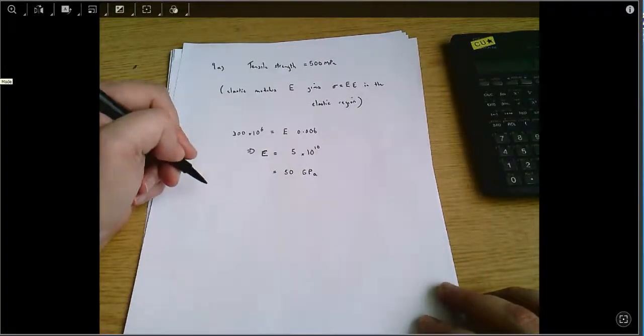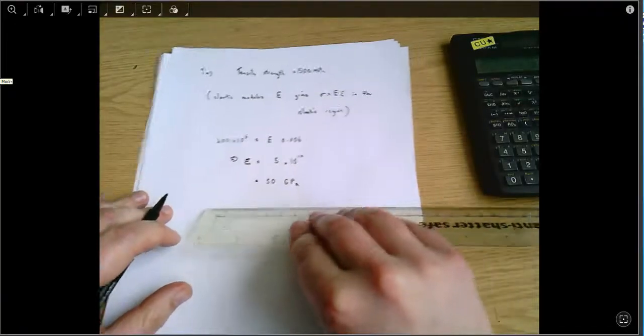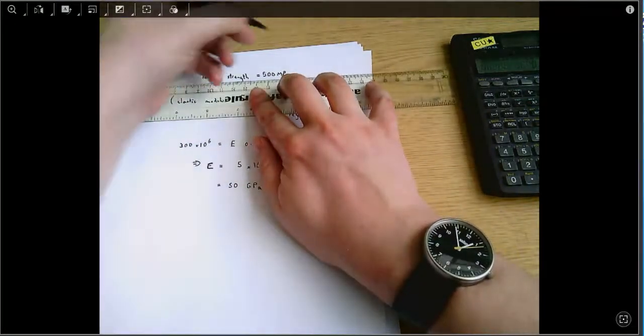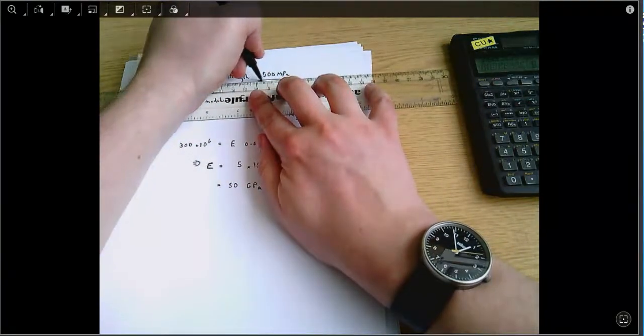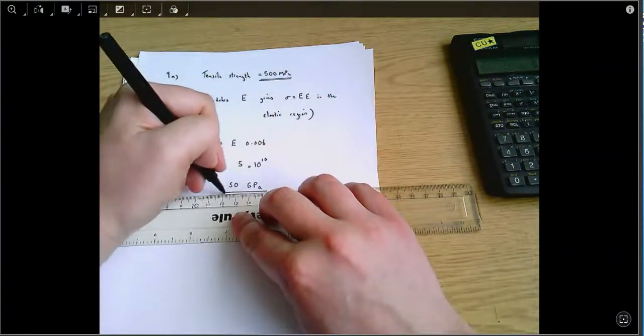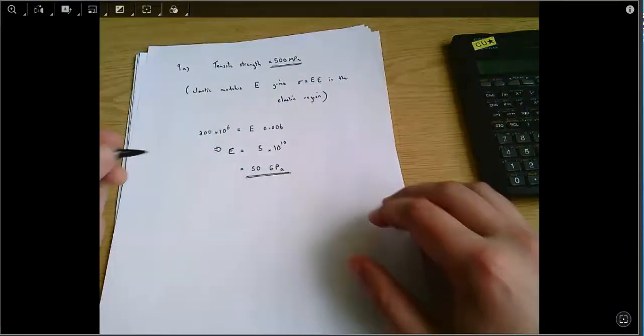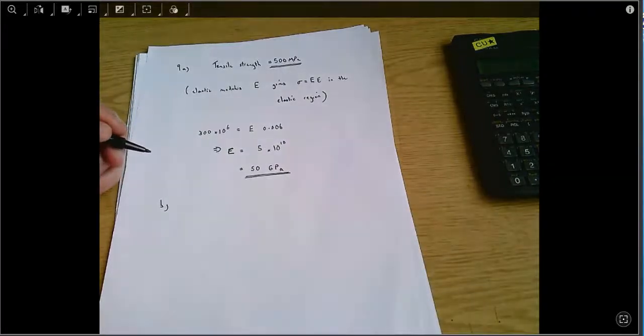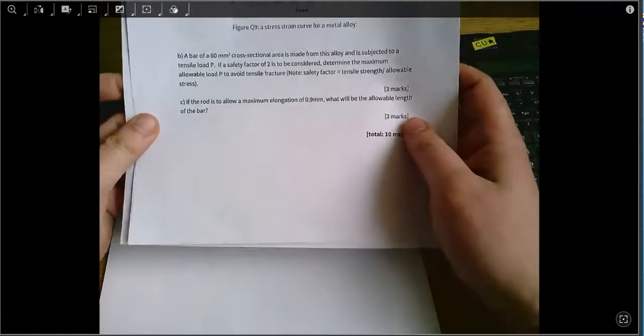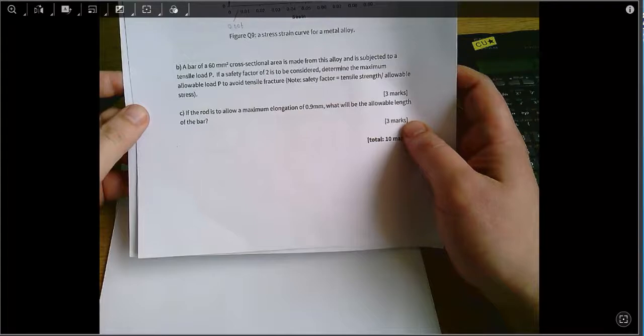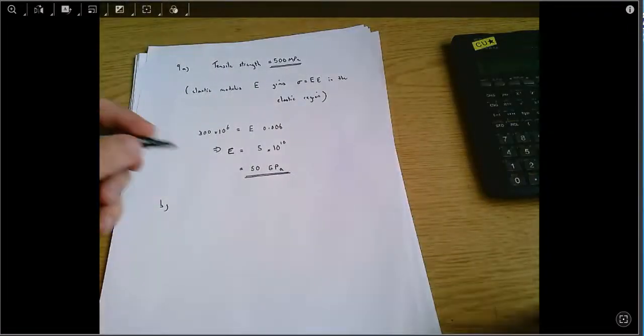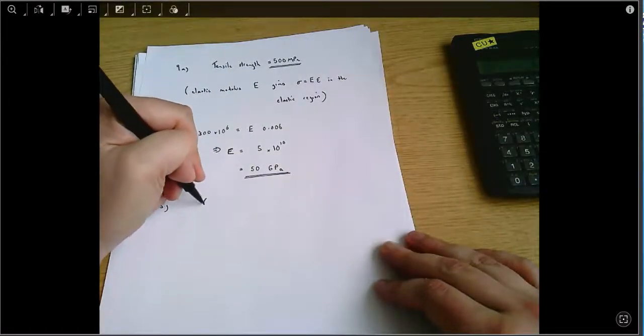OK, that's the answer to part A. There's two answers: 500 megapascals here and 50 gigapascals here. Part B, we're asked—we've got a bar of 60 square millimetres cross-sectional area. I'm just going to do one thing straight away as soon as I see that.